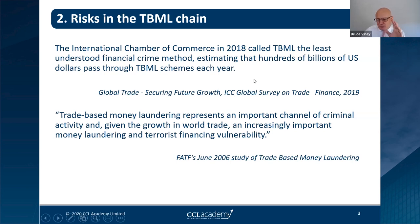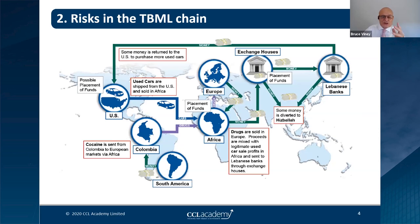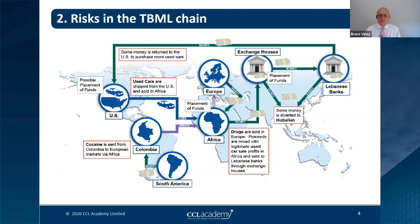The way trade-based money laundering is managed can vary from simple to very complicated. This well-known example is about 10 years old. Drug dealers in Colombia selling drugs in the US end up with dollars they don't want — they want Colombian pesos. They use trade to launder that money, co-mingling it and in fact diverting some of it to Hezbollah for terrorist purposes. People in the US are given funds to buy second-hand cars, which are shipped to West Africa — typically Benin.